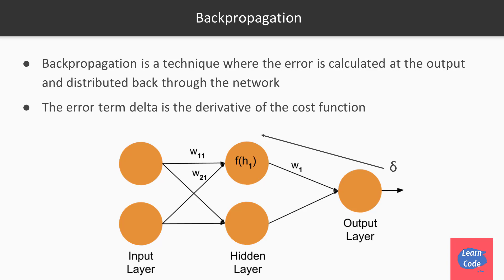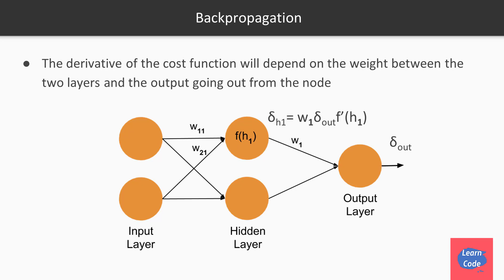Backpropagation is a technique where the error is calculated at the output and distributed back through the network. The error term delta is the derivative of the cost function, which we use during the backpropagation step. We start with the error term delta at the output layer and move it backwards to the hidden layer. Intuitively, the derivative of the cost function depends on the weights between the two layers and the output going from the node. So the error term at the hidden layer is given by w1 times the error term at the output, multiplied by the derivative of the output coming from the hidden layer.